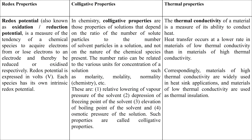First are Redox Properties. Redox Properties is a measure of the tendency of a chemical species to acquire or lose electrons from an electrode, thereby reducing or oxidizing respectively. Redox Potential is expressed in volts — it is basically the electrode's capacity to lose or gain electrons, or to oxidize or reduce. We call it Redox Potential.